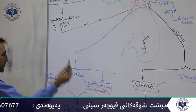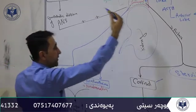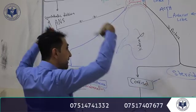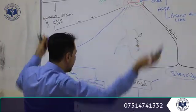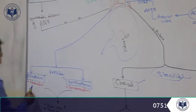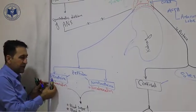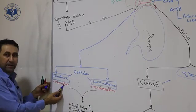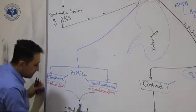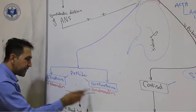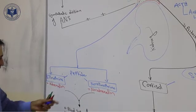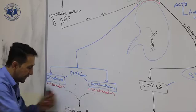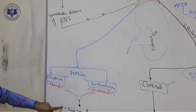The medulla produces peptide hormones, while the cortex produces steroid hormones — this is one key difference, along with how they are activated. The two peptide hormones are epinephrine and norepinephrine, also known by their old names adrenaline and noradrenaline. Their differences are not explained in the book.